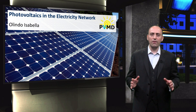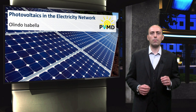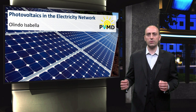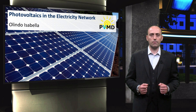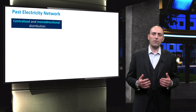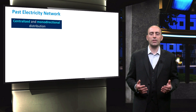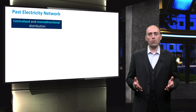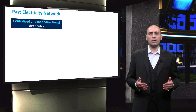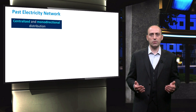Before we dive into the PV systems, however, let's first understand how the electricity network delivers the power from the suppliers to the consumers and how renewable energy can be integrated in such a network. Nowadays, we are facing a change in the paradigm of how energy is delivered from a power plant to the loads. Until now, the used electricity network can be defined as a centralized and monodirectional distribution system.